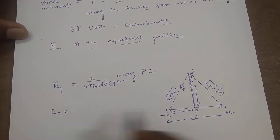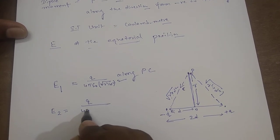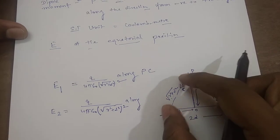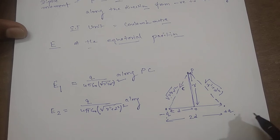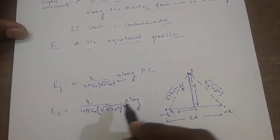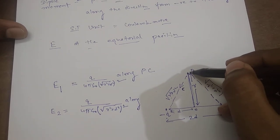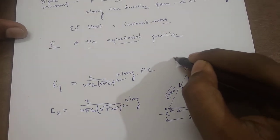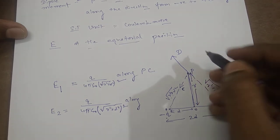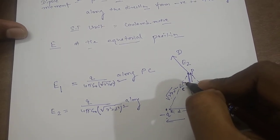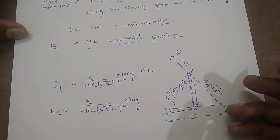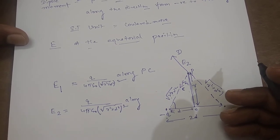Similarly, we will find out the electrical field due to the positive charge. The expression will be the same — why? Because this distance and this distance are the same, and this charge value and this charge value are the same. So the magnitude of E1 and E2 will be equal. But the direction will be different, because here if I put a positive unit charge, due to the repulsion from the positive charge, it will go towards the other direction. Let us suppose this direction is Pd. As this point is on the equatorial line, this triangle will be an isosceles triangle — meaning two sides will be equal, and the base angle θ will be equal.